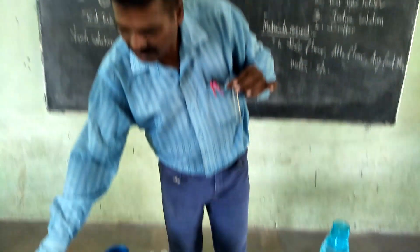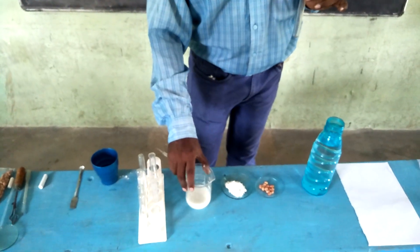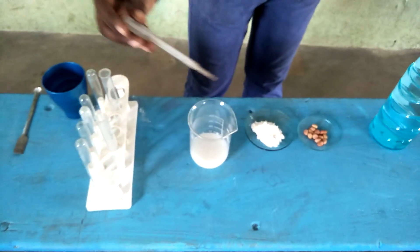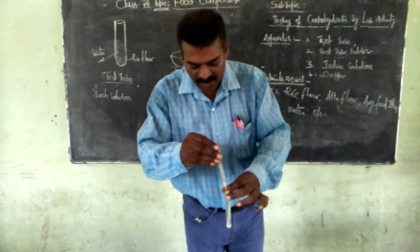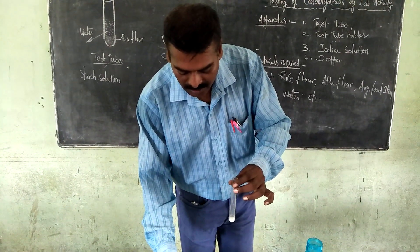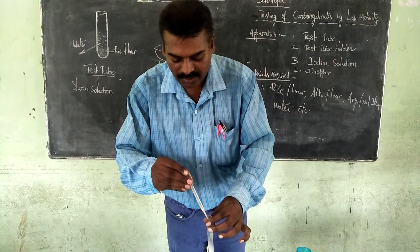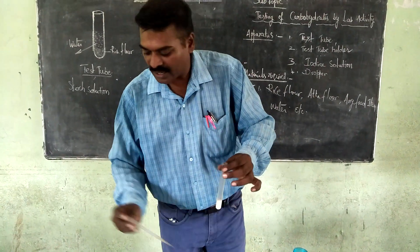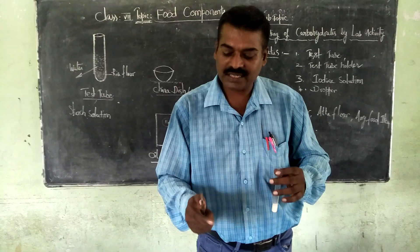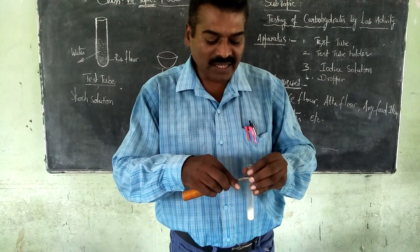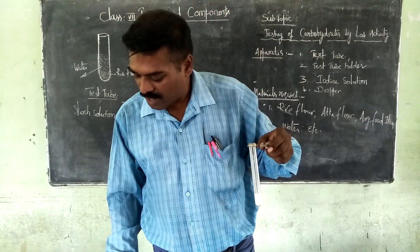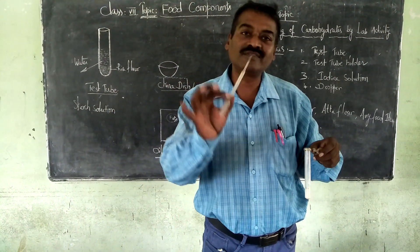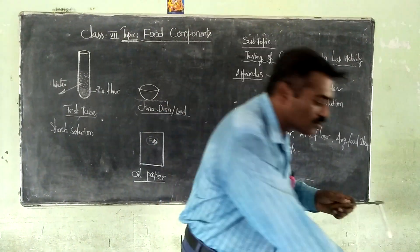Now take one test tube — select a transparent one. With the help of a dropper, take a few ml of the starch solution prepared just now and drop it into the test tube one by one, drop by drop. You can add as much as you want. Use the test tube holder to firmly hold it. That is why it is called a test tube holder. Now take the dropper to add one or two drops of iodine solution.